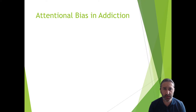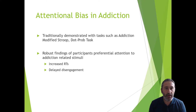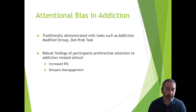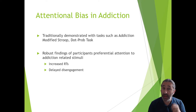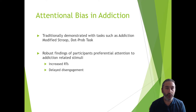Traditionally, in attentional bias research in addiction, we would refer to experimental designs including addiction-modified Stroop task, dot-probe task, among other things. We would report robust findings of participants' preferential attention to addiction-related stimuli, either in the form of increased reaction time in a Stroop task, delayed disengagement in the dot-probe task, or something we refer to as the slow effect.